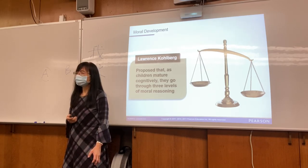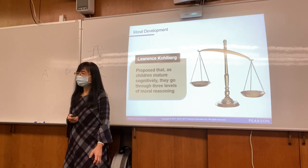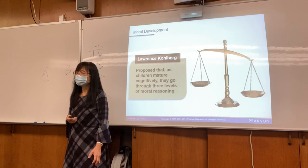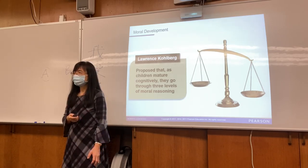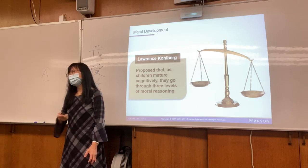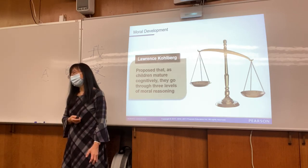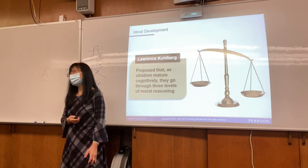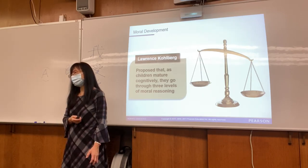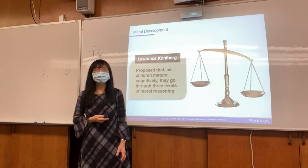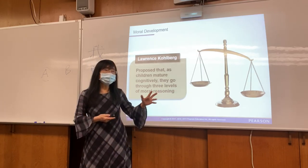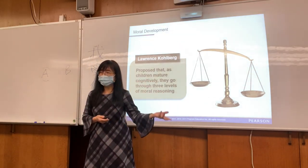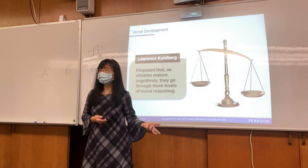Kohlberg's death was very sad — he parked his car on the side of a road, walked out onto a frozen lake, and his body was found two weeks later. He suffered from depression. He actually learned from Piaget and extended his work — Piaget talked about cognitive development, so Kohlberg asked: what about moral development? Through his dilemma stories, he identified three levels of moral reasoning that people develop through.